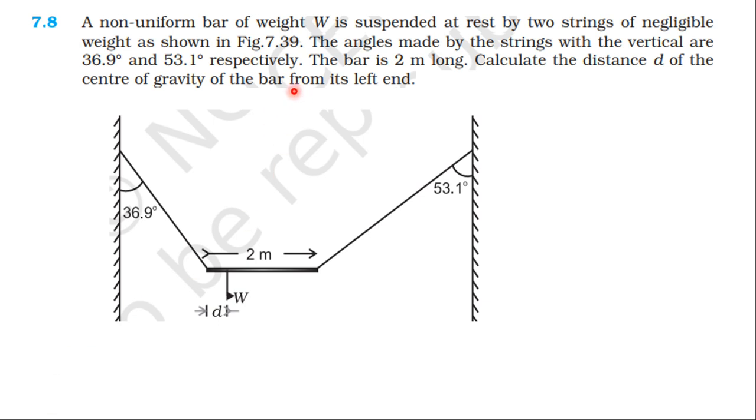From NCERT textbook, from the topic System of Particles and Rotational Motion, learned exercises 7.8. A non-uniform bar of weight W is suspended at rest by two strings of negligible weight as shown in figure. The angles made by the strings with the vertical are 36.9 degree and 53.1 degree respectively. The bar is 2 meter long. Calculate the distance d of the center of gravity of the bar from its left end.